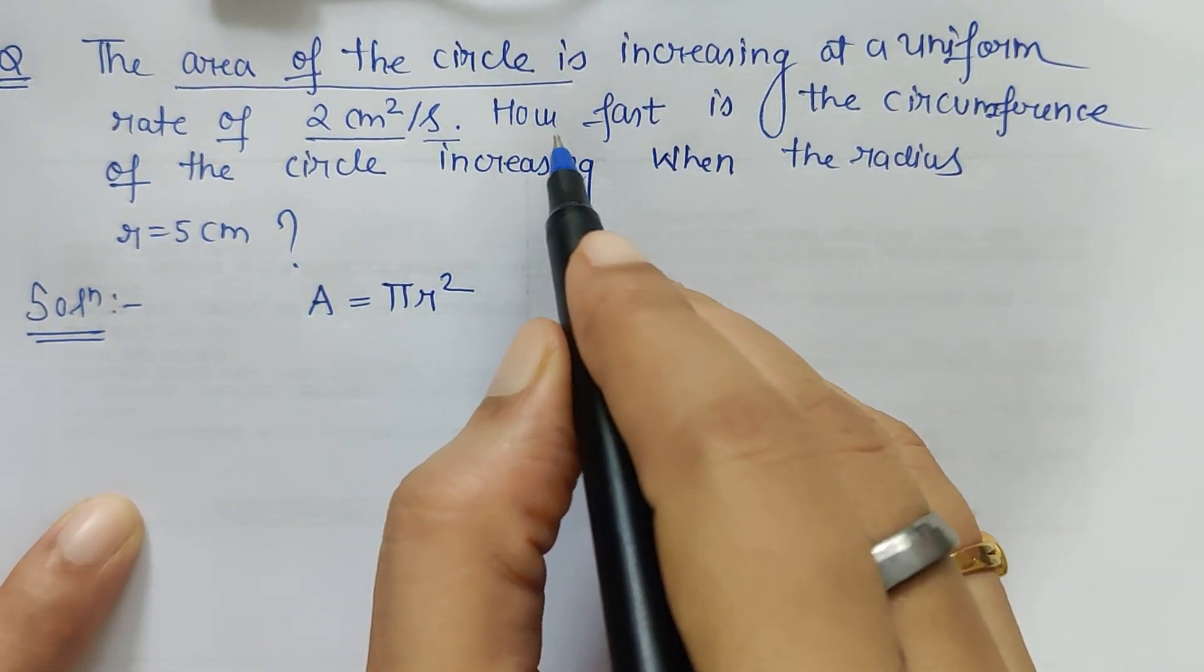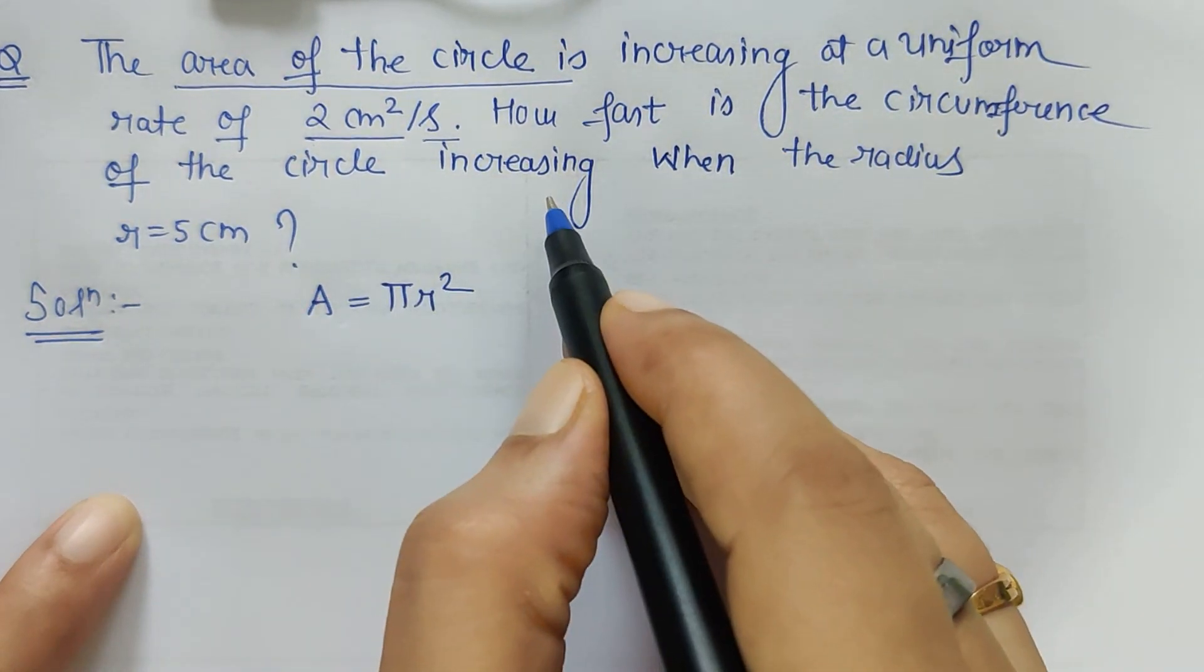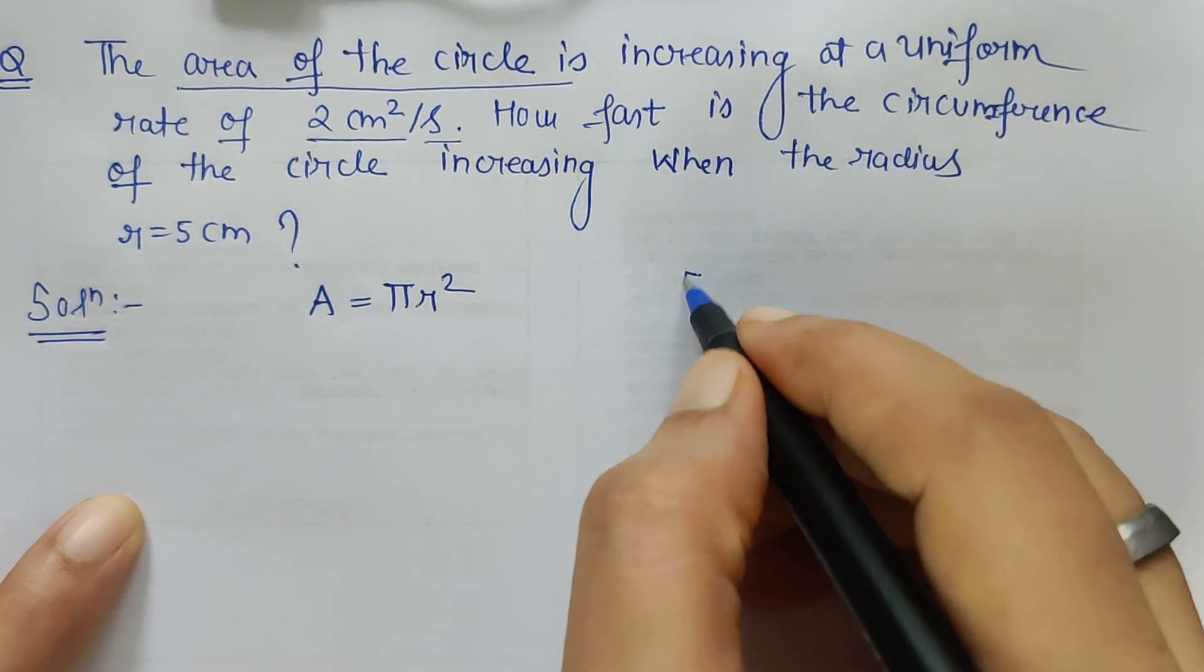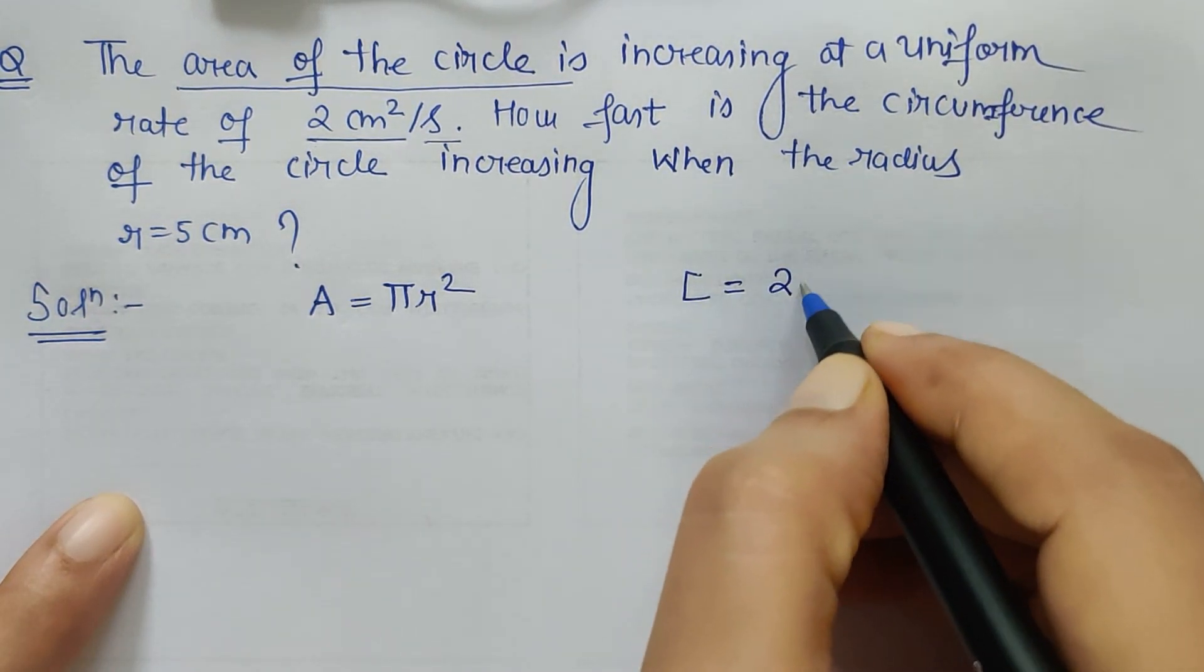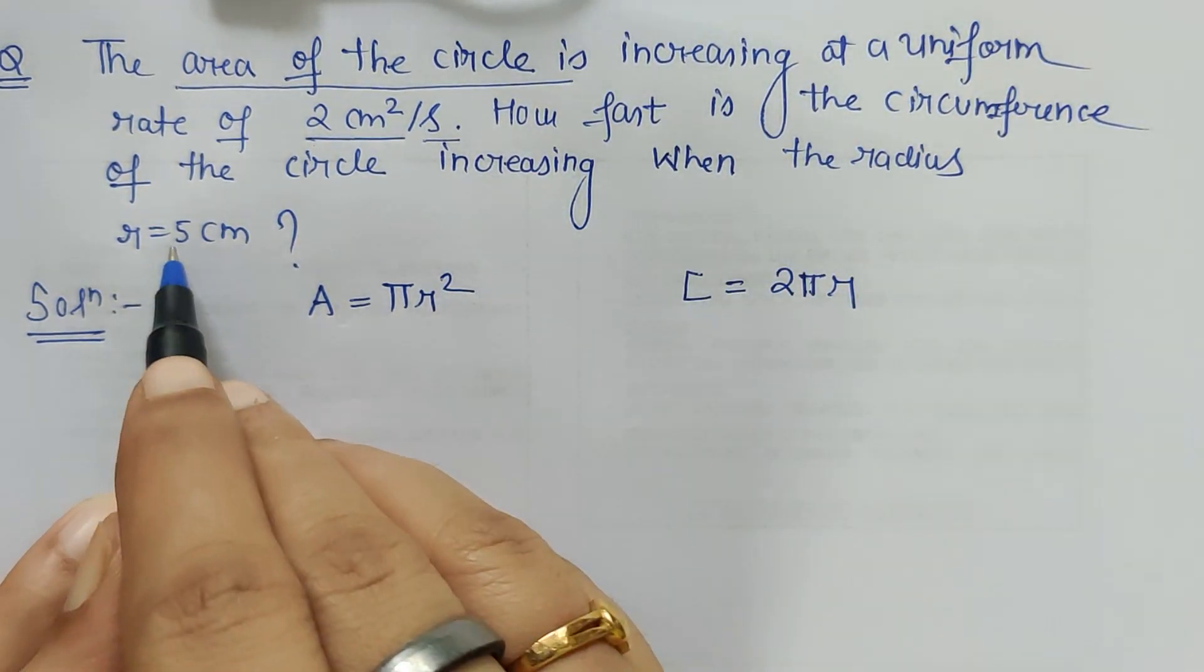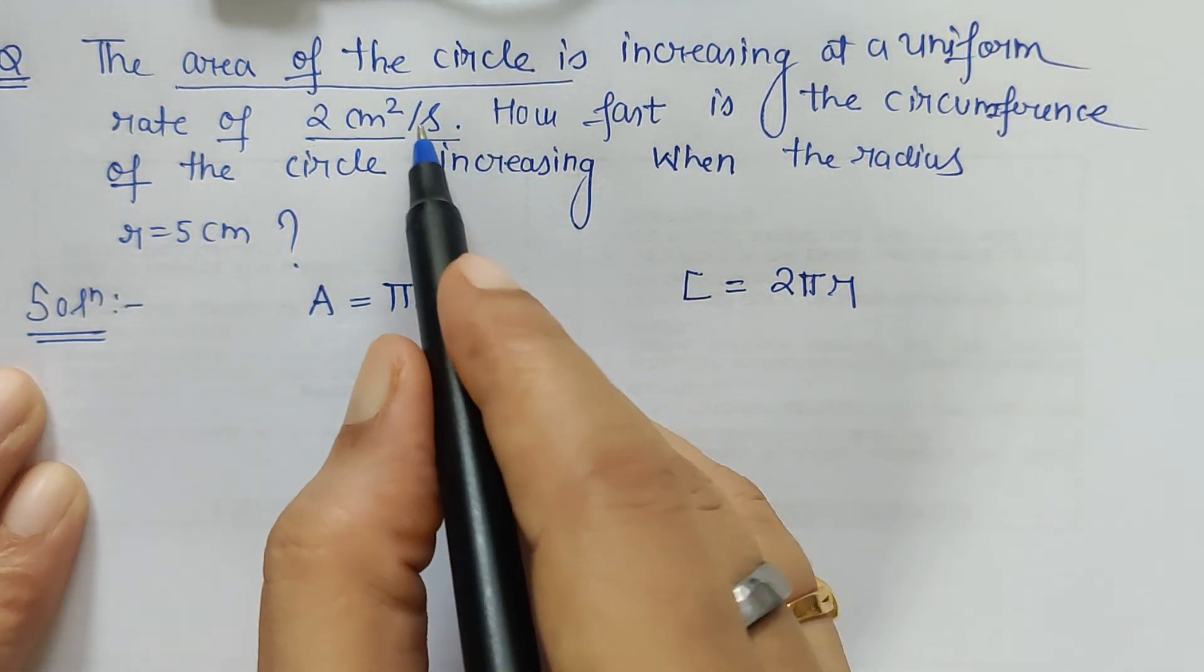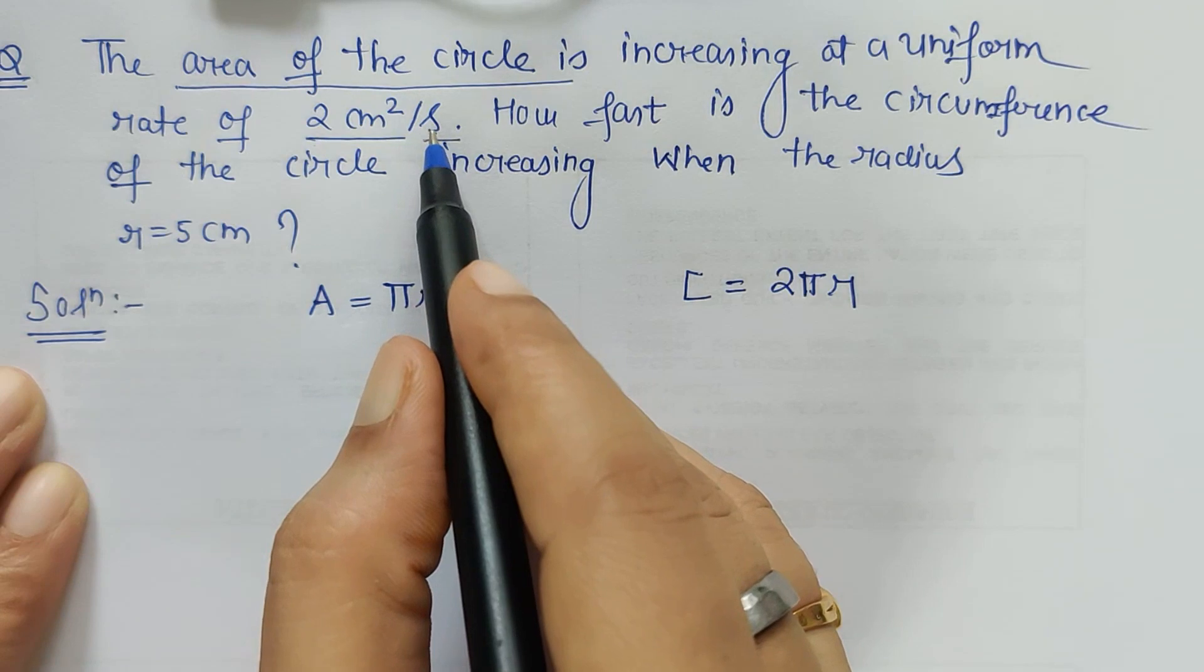When I read ahead, what is given: how fast is the circumference of the circle increasing? That means again the formula required is circumference of the circle, which is C = 2πr, when the radius r is equal to 5 centimeters. For this question we have to differentiate with respect to time because the unit given is seconds.